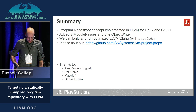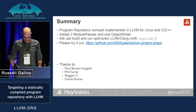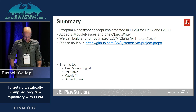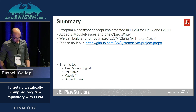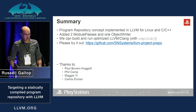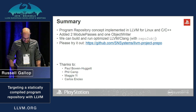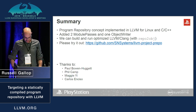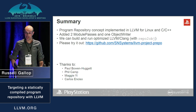In summary, we've implemented the program repo concept for C and C++ with LLVM. It involved adding two new optimization passes and a new object type. We've reached a stage where we can self-host LLVM and Clang with it. If you're interested, please try it out and let us know how you get on.